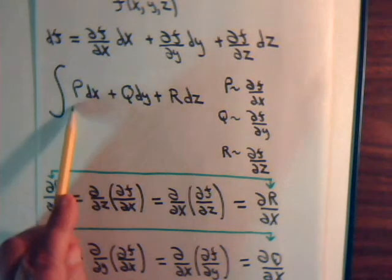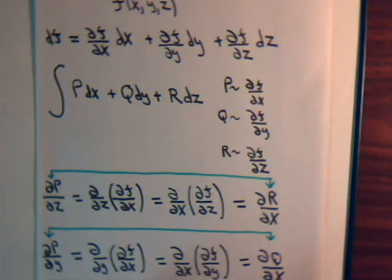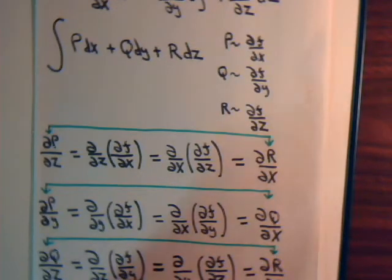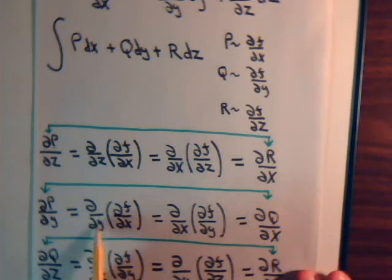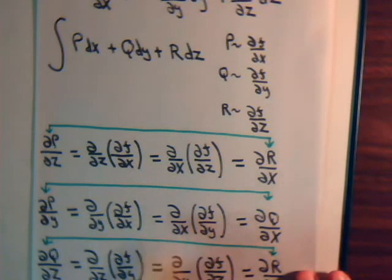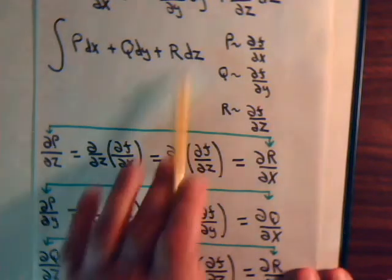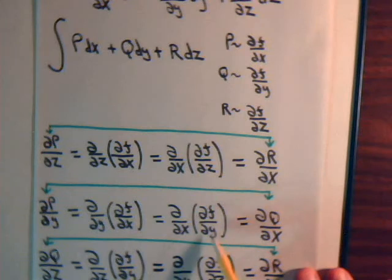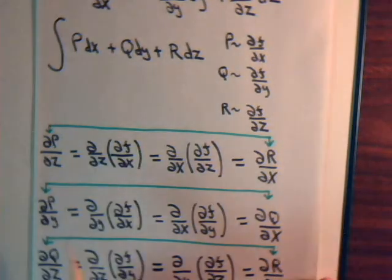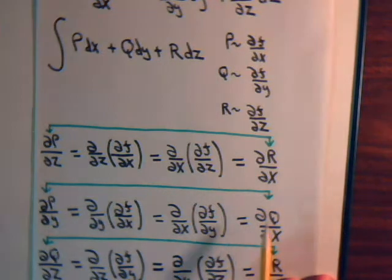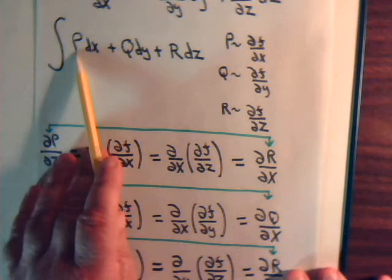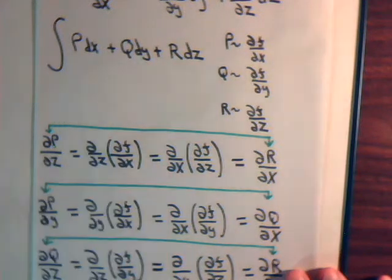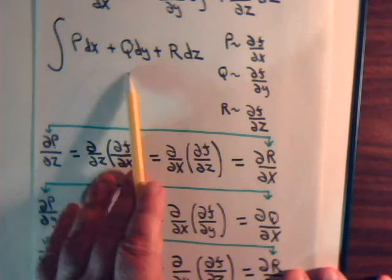Now, the partial of p with respect to y — this is the same as the two-dimensional case from the earlier videos. If this is an exact differential, p is the partial of f with respect to x, and taking another partial we can switch the order. Since the partial of f with respect to y is q, we have: the partial of p with respect to y equals the partial of q with respect to x. The same symmetry holds: we take the partial of p with respect to y, and it equals the partial of q with respect to x.